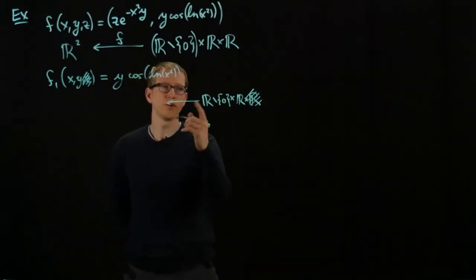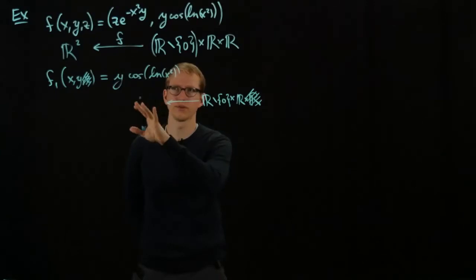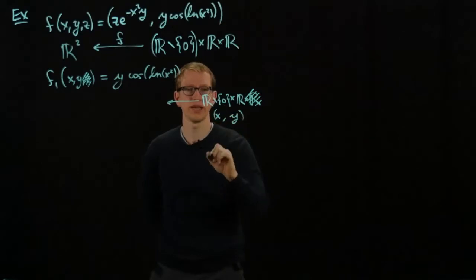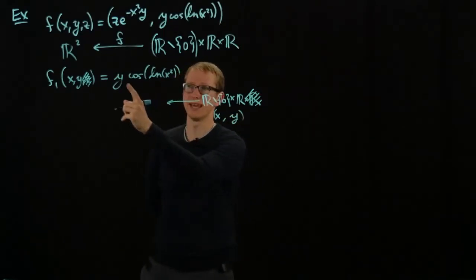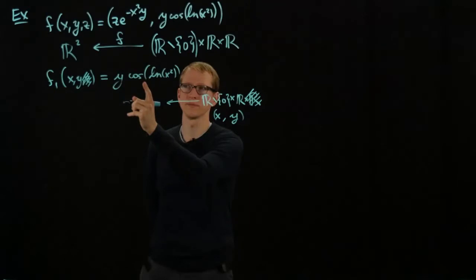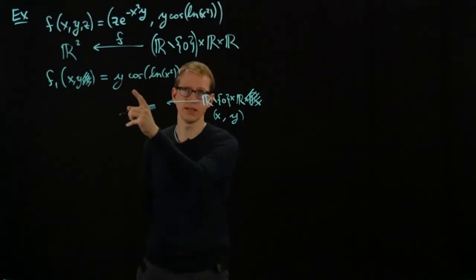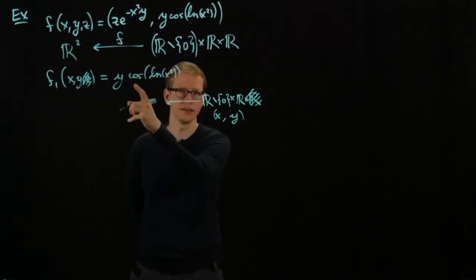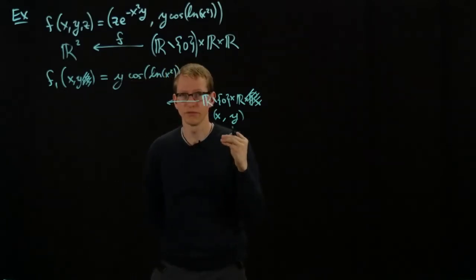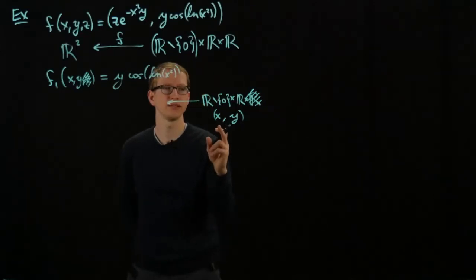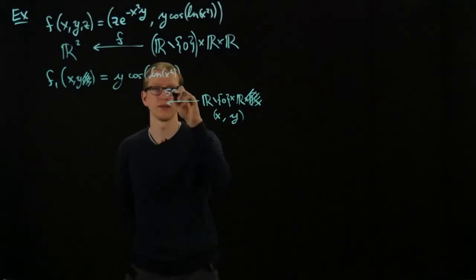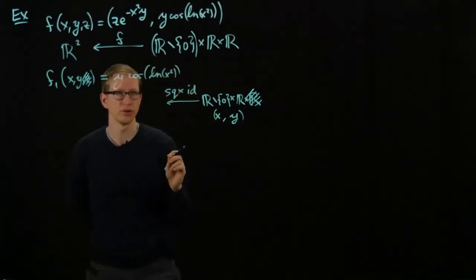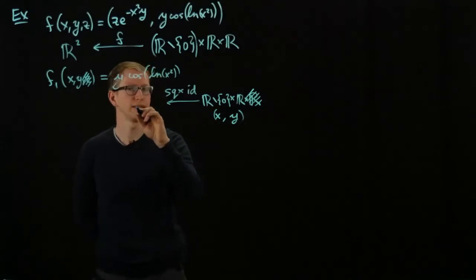Before we multiply or take logarithms or cosines, we remind ourselves that we're starting with the point (x, y), and the last step should be that we multiply the two entries. We do absolutely nothing to the y coordinate — all the action happens in x. The first thing that happens is we square x, applying the square function and leaving the second component fixed as the identity.